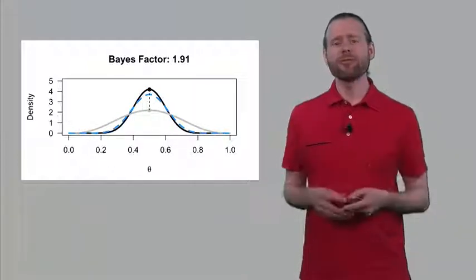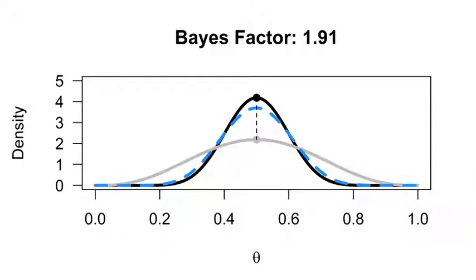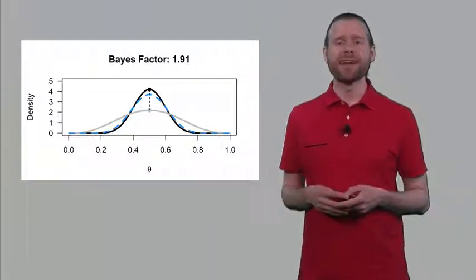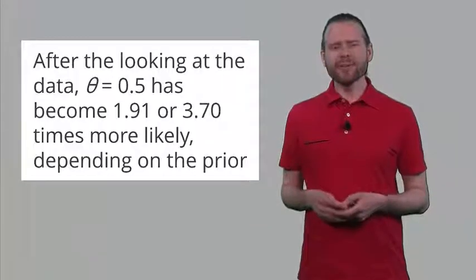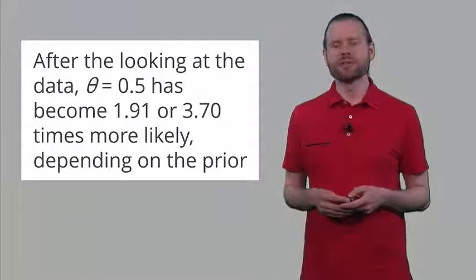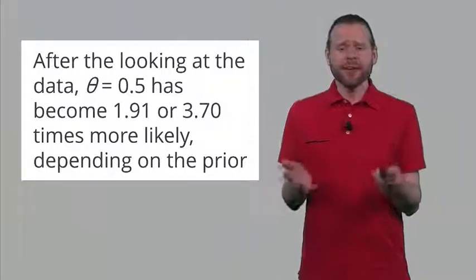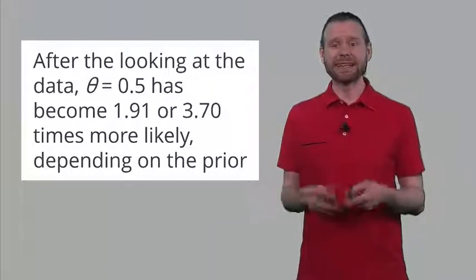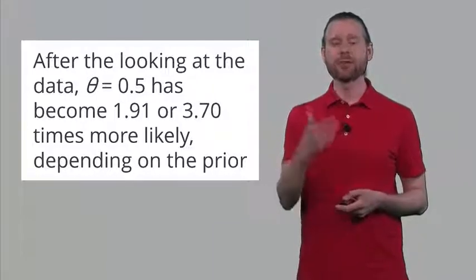In this slightly different version we have a different prior but observed exactly the same data. The prior was slightly more informed — we already expected the coin to be fair. We again see that for theta = 0.5, our belief in the hypothesis that the coin is fair has increased. But because we already had quite a strong prior, the data only increases our belief by a factor of 1.9. So after looking at the data, the hypothesis that theta is 0.5 becomes either 1.91 or 3.70 times more likely, depending on the prior we had.